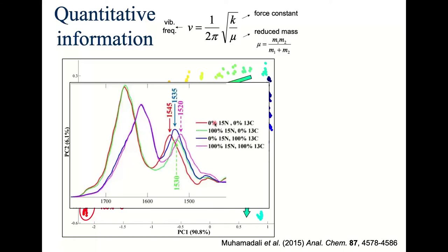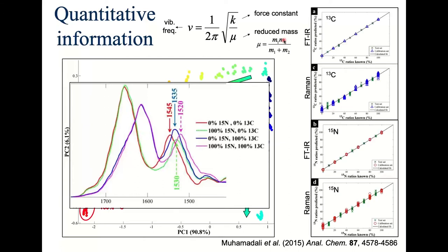We also did bulk Raman. These shifts occur because vibrational frequency changes are governed by the reduced mass — the mass of the two bonded atoms multiplied and divided by their sum. Going from ¹⁴N to ¹⁵N or ¹²C to ¹³C gives a modest reduced mass change. Later, labeling with deuterium causes a larger reduced mass shift and therefore more profound changes in vibrational frequencies. We used partial least squares regression with training and calibration sets, obtaining excellent prediction for both ¹³C and ¹⁵N using both infrared and Raman spectroscopy.